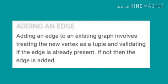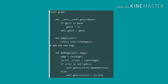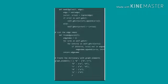Adding an edge. Adding an edge to an existing graph involves treating the new vertex as a tuple and validating if the edge is already present. If not, then the edge is added. And here is the code.